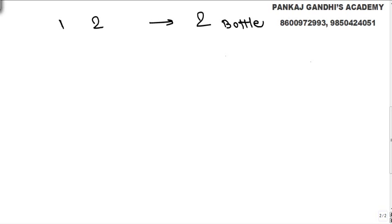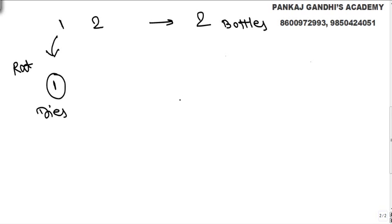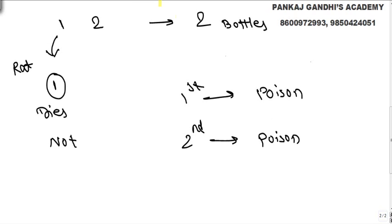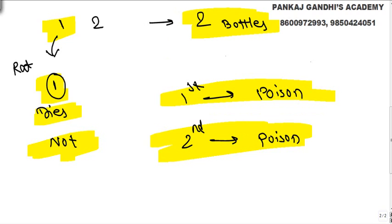Let's say there are two bottles, and one of them contains the poison. What we will do is give some liquid from bottle one to the first rat. If the rat dies, the first bottle contains poison. If it does not die, the second bottle contains poison. So if two bottles are there and one contains poison, we need only one rat to decide.